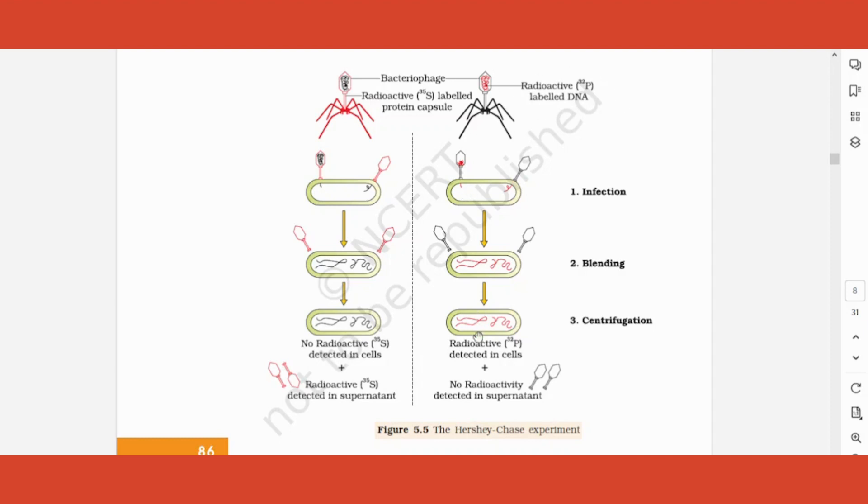After that, they made set one attack a group of bacteria, and set two bacteriophage or the virus attack the second set of bacteria. Now what should be the inference? Whichever is the genetic material, that is, if protein is the genetic material, sulfur should be present in the bacteria. If DNA is the genetic material, phosphorus which is radioactive should be present in the bacteria.